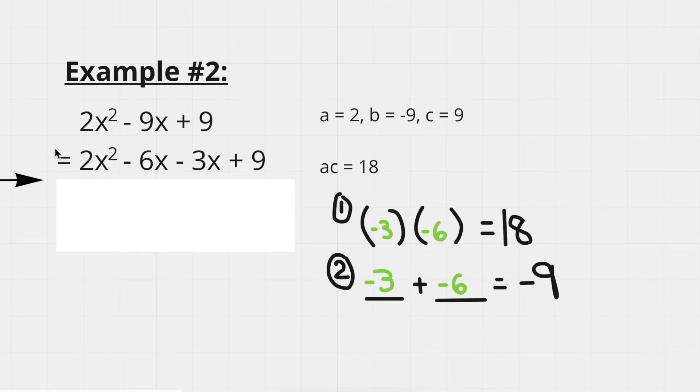Now when we follow our steps, we can now break this negative 9 term into negative 6x and negative 3x. Then we simply factor by grouping. So 2x times x minus 3, minus 3 times x minus 3. So you're essentially just taking out the greatest common factor from these two terms and these two terms.